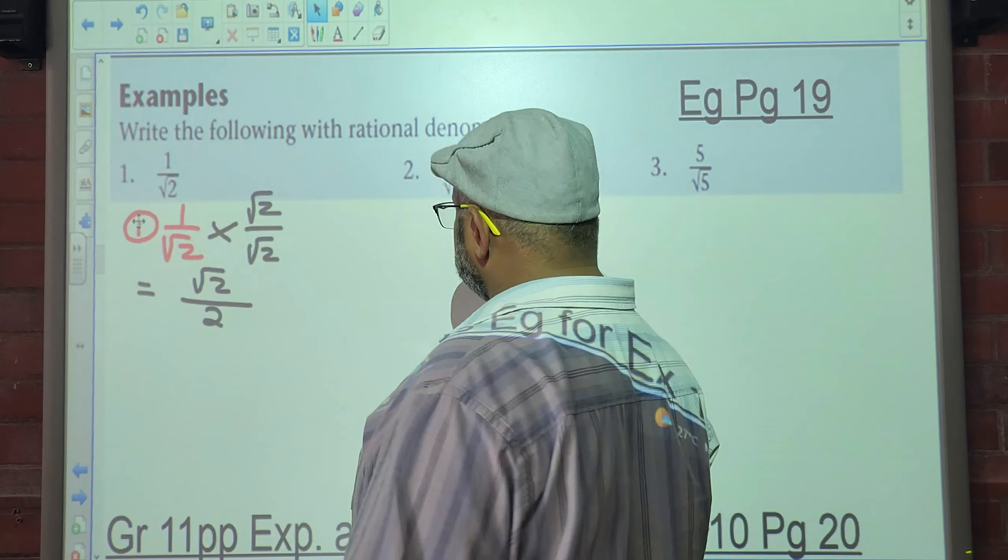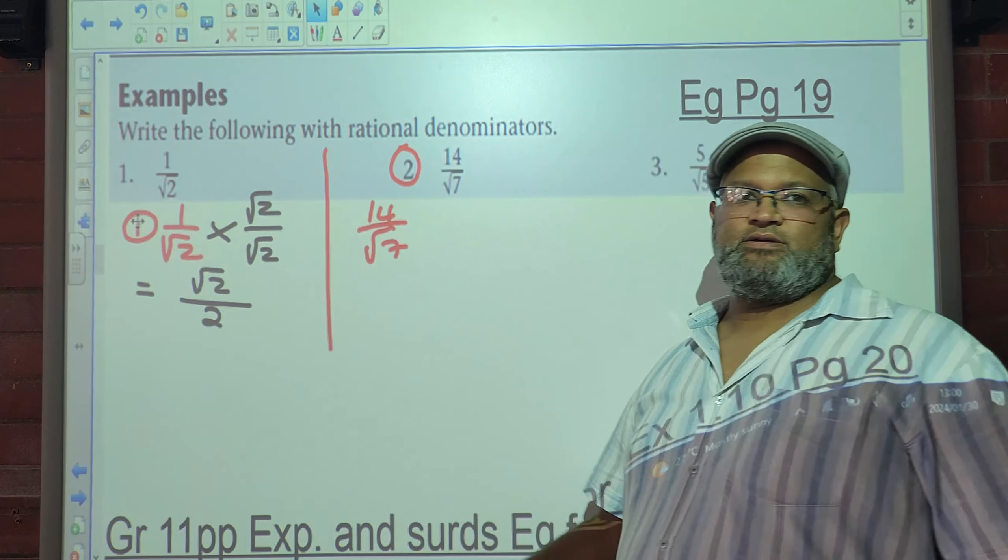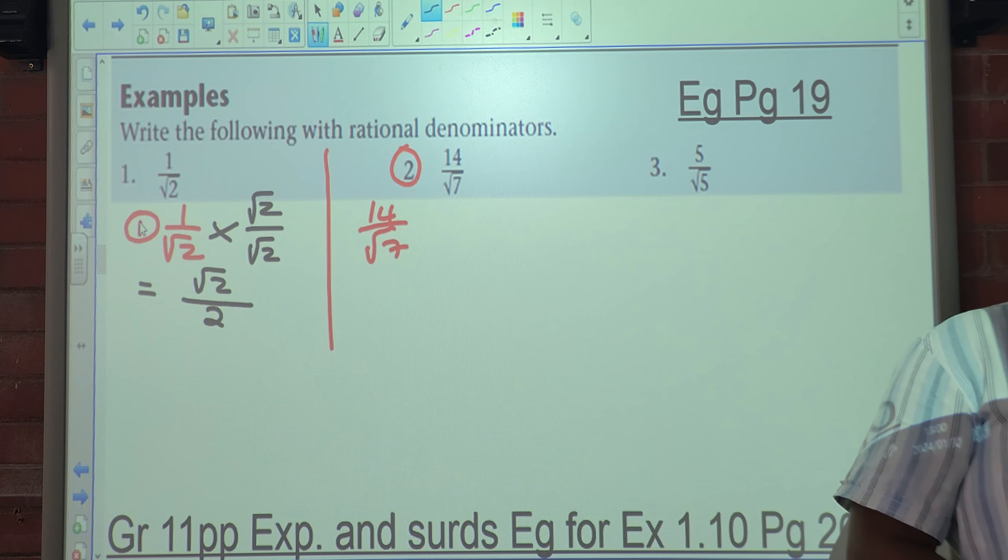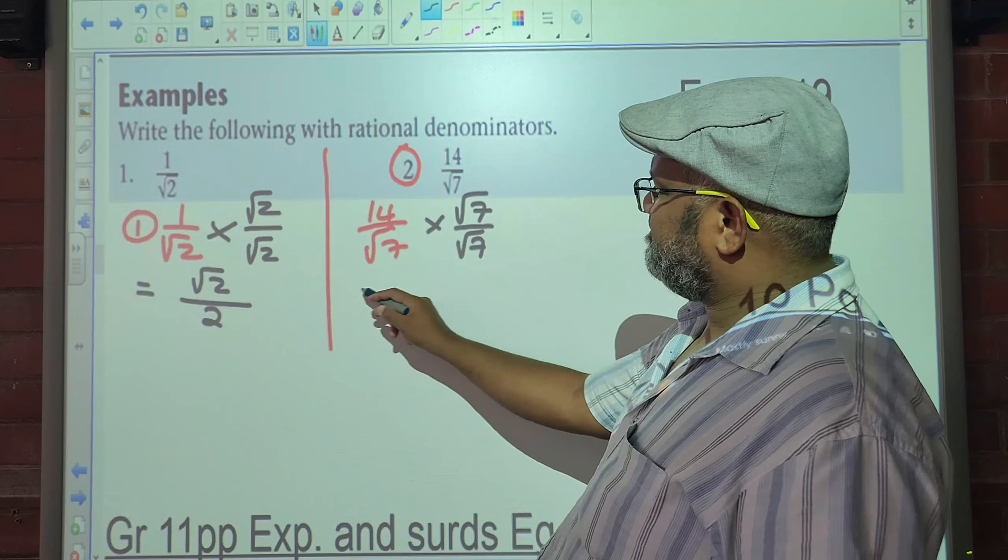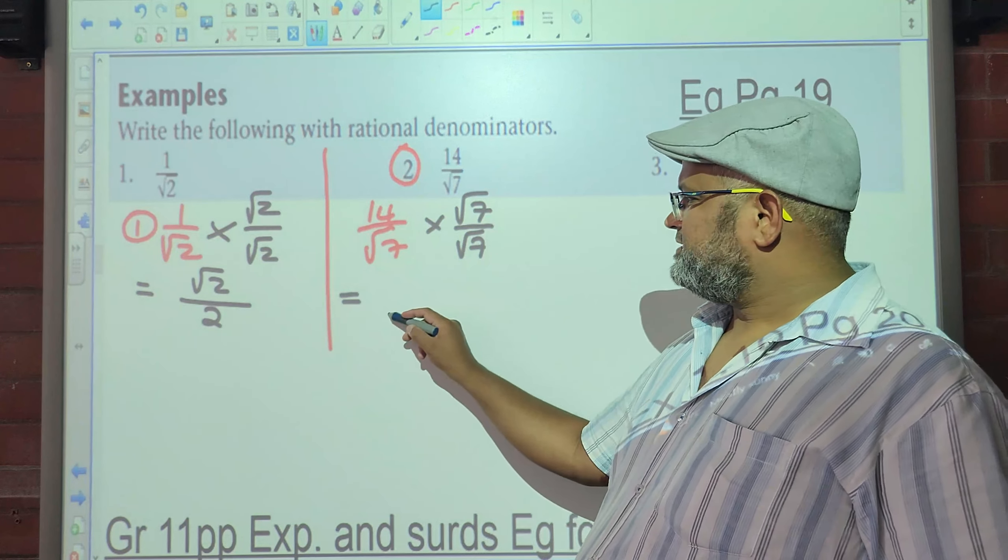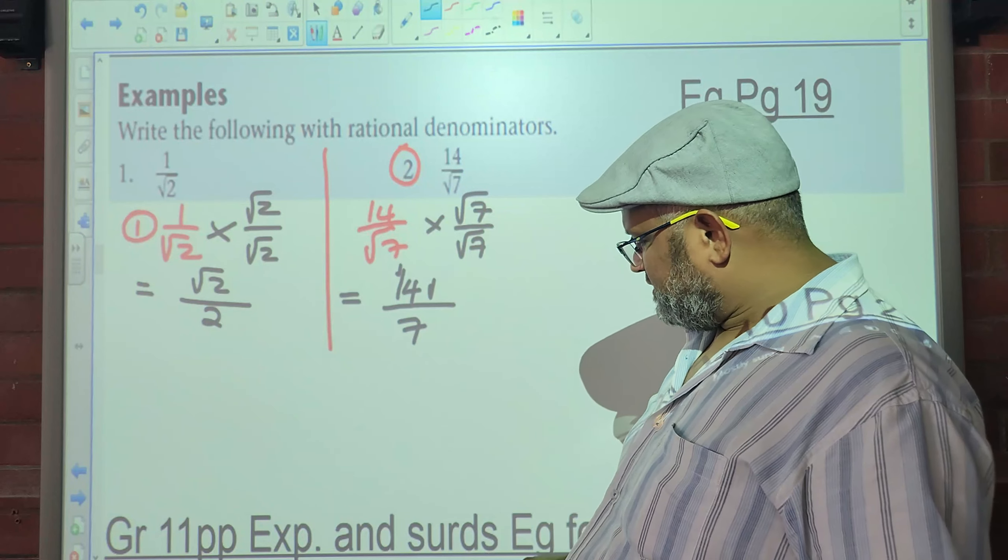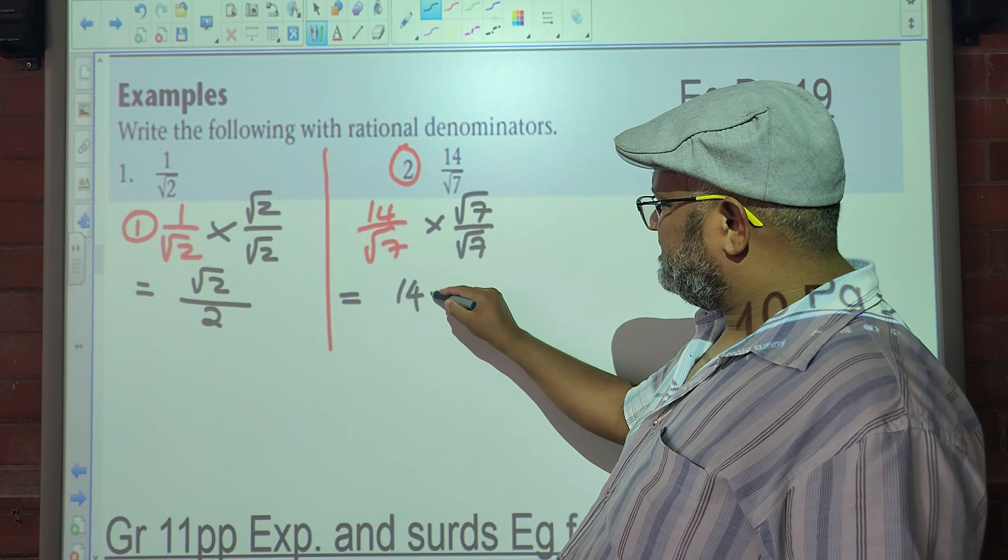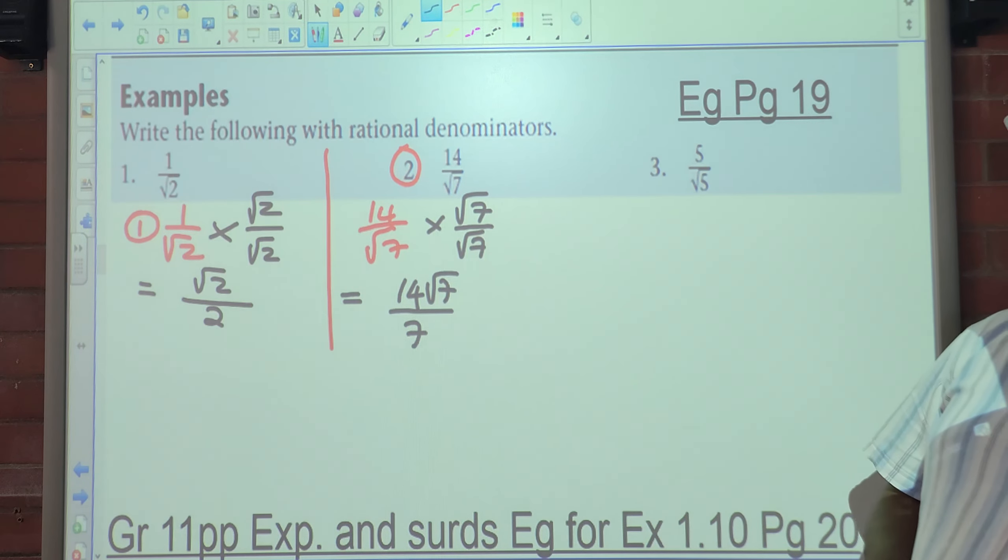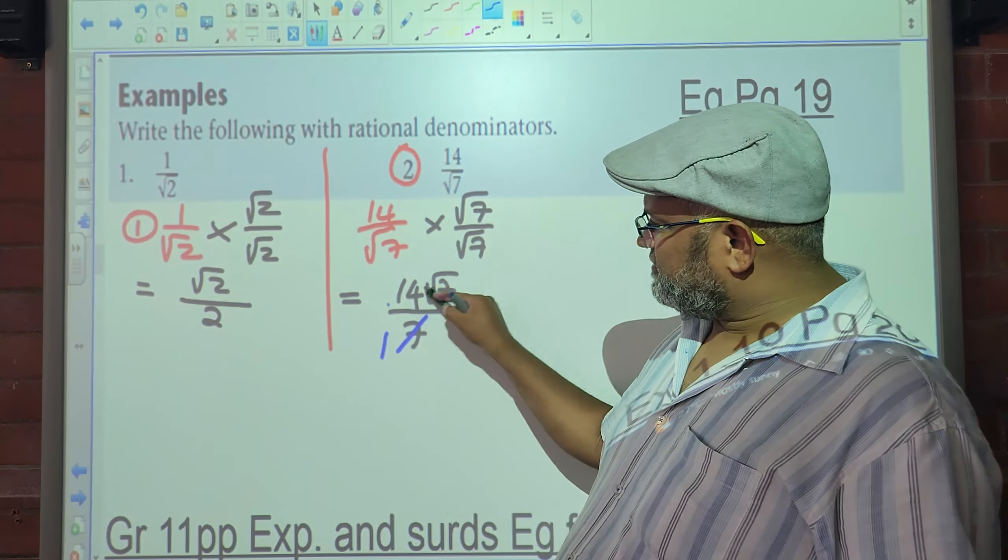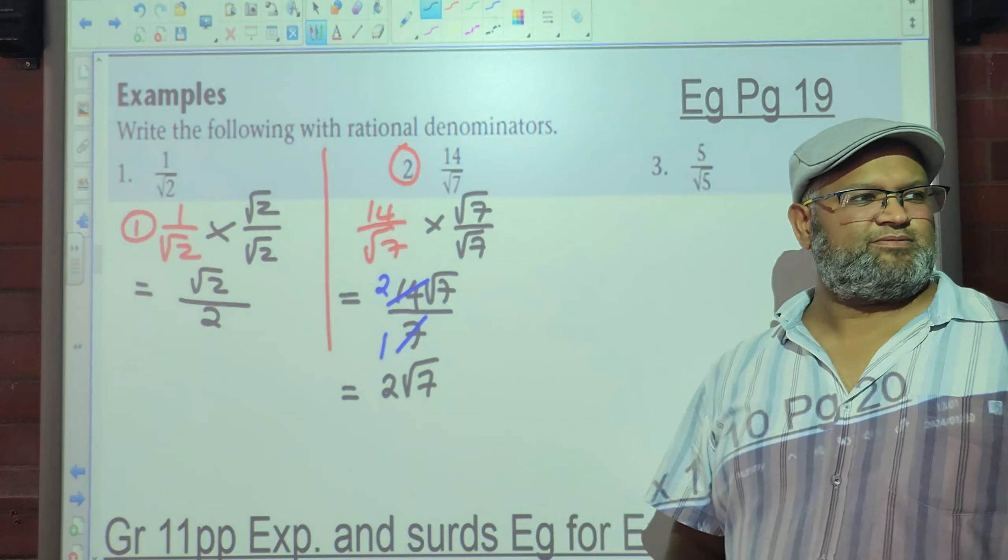Let's look at number 2. We have 14 over the square root of 7. Alright, so what do you think we're going to multiply this by? Again, the root 2 over root 2? No. We're going to multiply this by root 7 over square root 7. What's square root 7 multiplied by square root 7? 7. 14 times root 7? 14 square root 7. What do you notice now? 7 going to 7 once, 7 going to 14. That would simply be 2 root 7 over 1, which is 2 root 7.